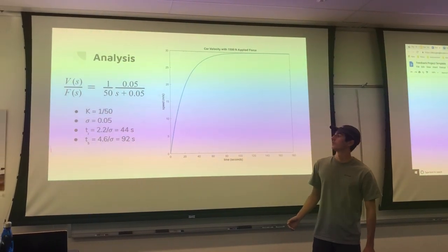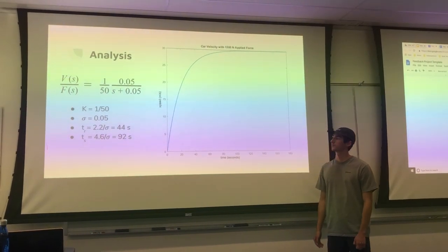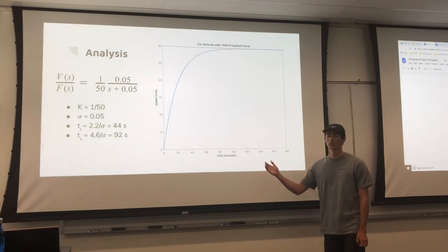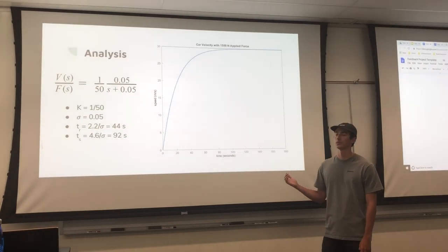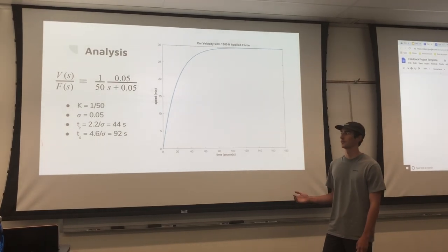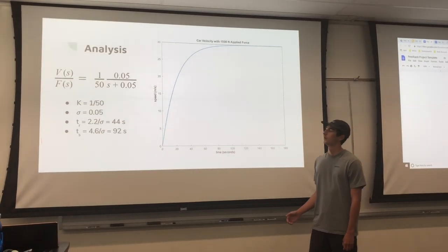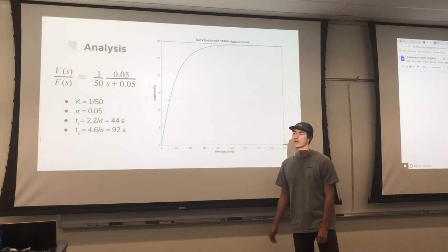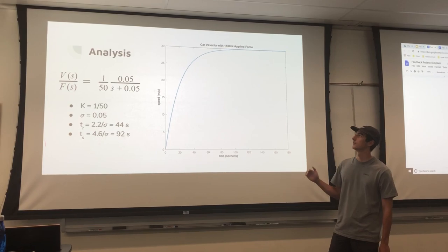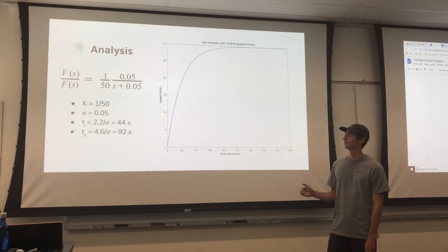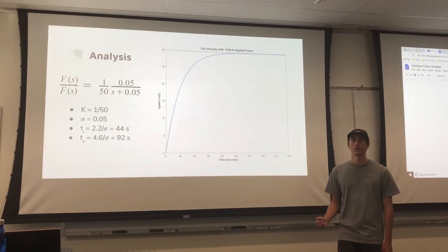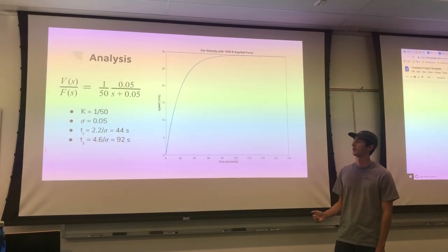That basically means it will get to 90% of our desired value in 44 seconds, meaning the acceleration is quite slow. We also get a settling time of 92 seconds, meaning it comes within 1% of that desired steady-state value in 92 seconds. We are going to need a controller to bring these times down to a desired time.